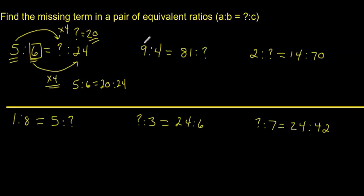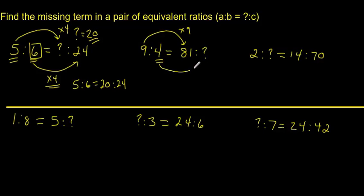We've got 9 to 4 is the same as 81 to something. We're going to use what we know — we know the 9 and the 81. To get from 9 to 81, I have to multiply by 9. So that means I have to multiply this 4 by 9 as well. Four nines are 36. So that means that 9 to 4 is equal to 81 to 36.